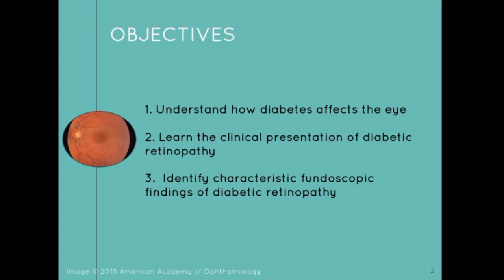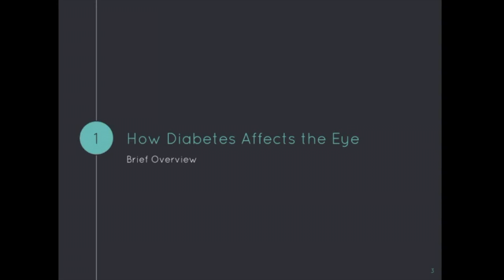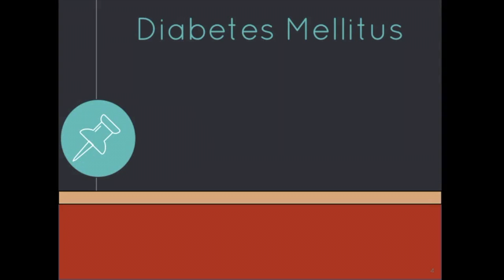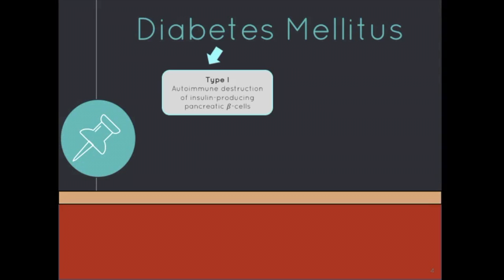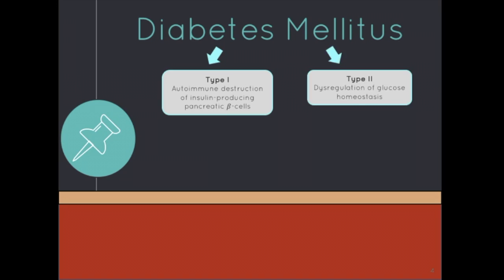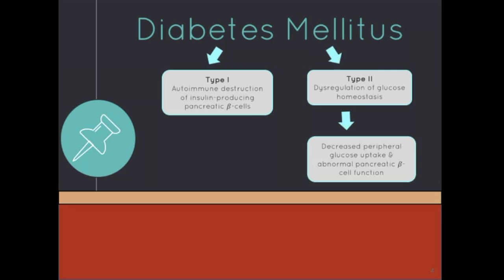In order to understand how diabetes affects the eye, let's briefly review some important diabetes mellitus concepts. DM is divided into two types. Type 1 is characterized by the autoimmune destruction of insulin-producing pancreatic beta cells, while type 2 involves dysregulation of glucose homeostasis, leading to decreased peripheral glucose uptake and abnormal pancreatic beta cell function. Both type 1 and type 2 cause increased blood glucose levels.